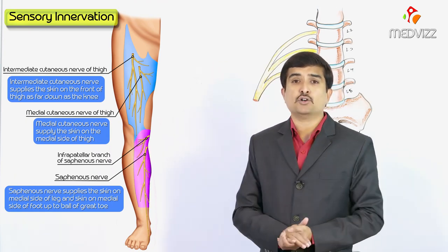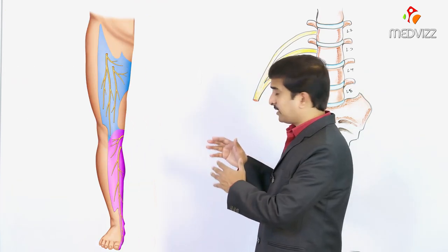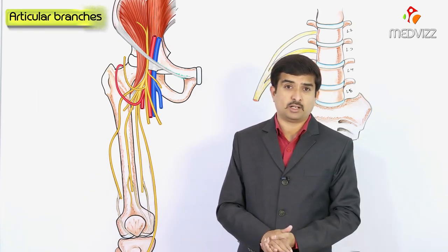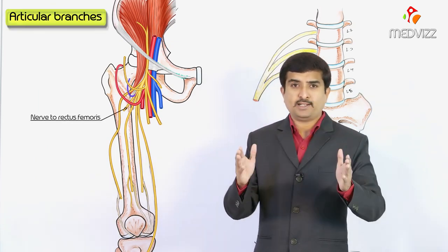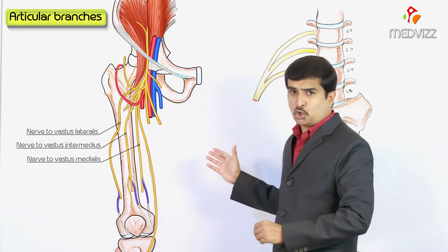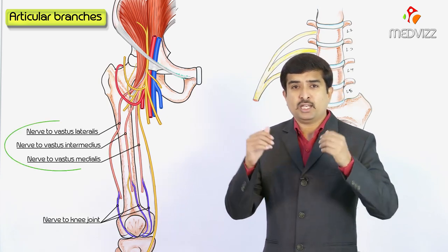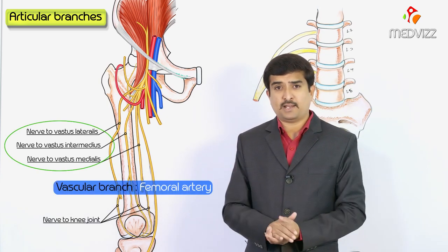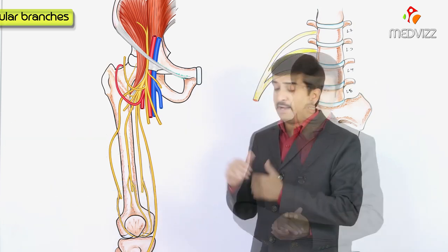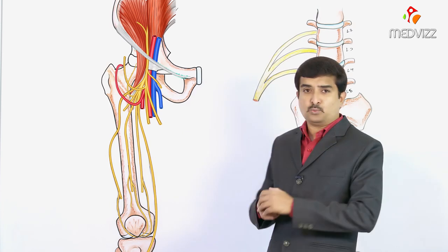Regarding articular branches, the hip joint is supplied by the nerve to rectus femoris, and the knee joint is supplied by nerves to the three vasti. A vascular branch is also given off to the femoral artery. This completes the sensory, motor, articular, and vascular supply of the femoral nerve.